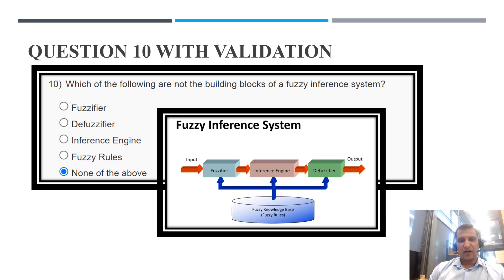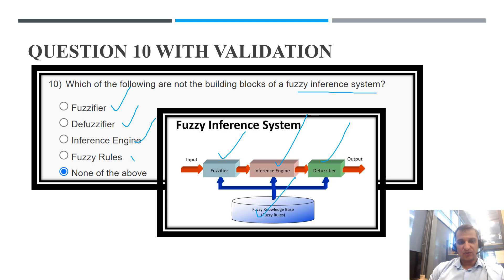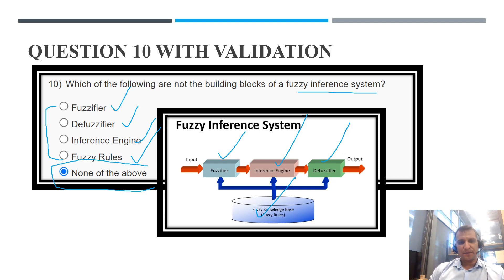Question 10 asks which of the following are NOT building blocks of a fuzzy inference system. The basic fuzzy inference system requires: a fuzzifier, a defuzzifier, an inference engine, and fuzzy rules — all are part of it. Since all listed options are valid components, the question is flawed. At least one non-component option should be present. I have selected option E (none of the above) and sent feedback regarding this issue.